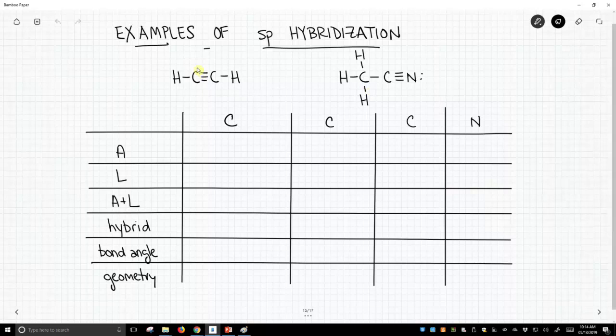So on the left-hand structure, acetylene, both those carbons are equivalent, so we're only going to treat one of them. Each of those carbons has two attached atoms. It's attached to a hydrogen on one side and a carbon on the other. Ignore the triple bond. That attached carbon is one attached atom.